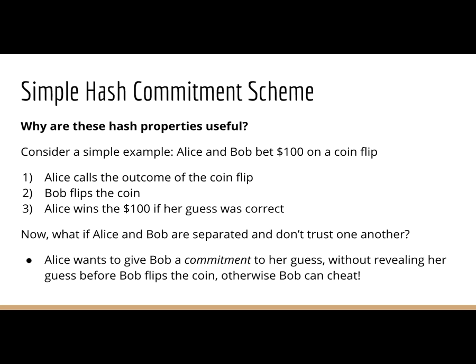To better illustrate these cryptographic hash function properties, here's a quick example I call the simple hash commitment scheme. Say you've got two people, Alice and Bob, betting on the outcome of a coin flip. Alice guesses the coin flip will be heads; if Bob flips and it's heads, Alice gets a hundred dollars, otherwise Bob gets a hundred dollars. You have a simple adversarial game where Alice first calls the outcome, Bob flips the coin, and if the coin matches her guess, Alice wins.